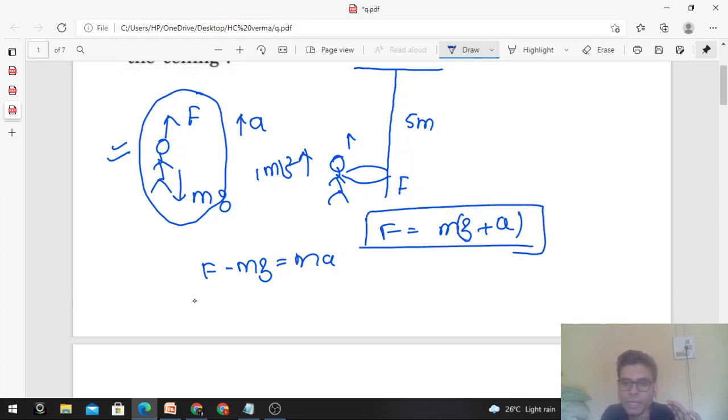The force which the monkey applies on the rope can be found: mass is 15 kg, g is 9.81 m/s², and a is 1 m/s². You can calculate this value.